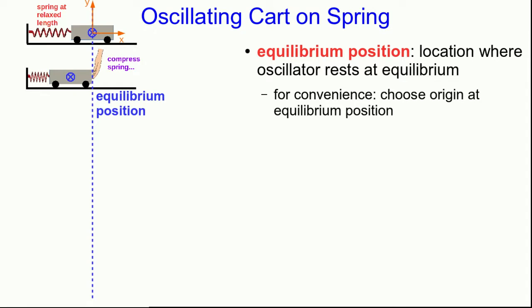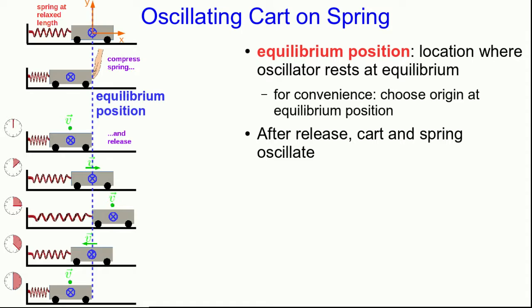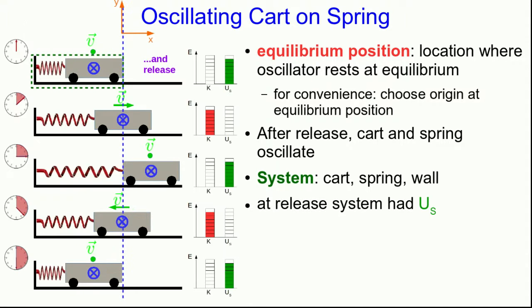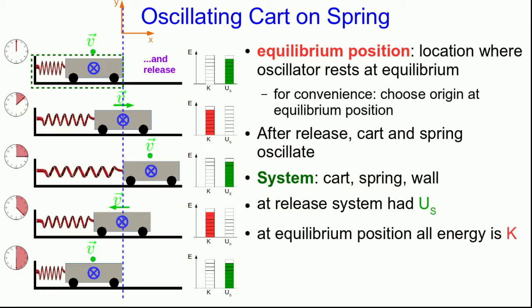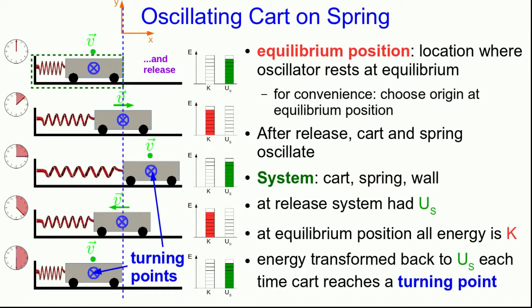Now let's think about what happens when we compress the spring and then release it. Many people, when they first think about this situation, think that the cart will simply return to its equilibrium position where the vector sum of forces on it is zero. But that's not at all what happens — the cart and spring oscillate. We'll think of the system as the cart, the spring, and the wall. This is a closed system after you let go of it. At the moment we release it, that system has spring potential energy. But because it's a closed system, when it gets to equilibrium where the spring is relaxed and there is no spring potential energy, all of the energy of the system must now be kinetic. So it doesn't stop there because it must be moving, and it continues on until it reaches the far point of its motion where it's brought to rest again when all of its energy is spring potential energy.